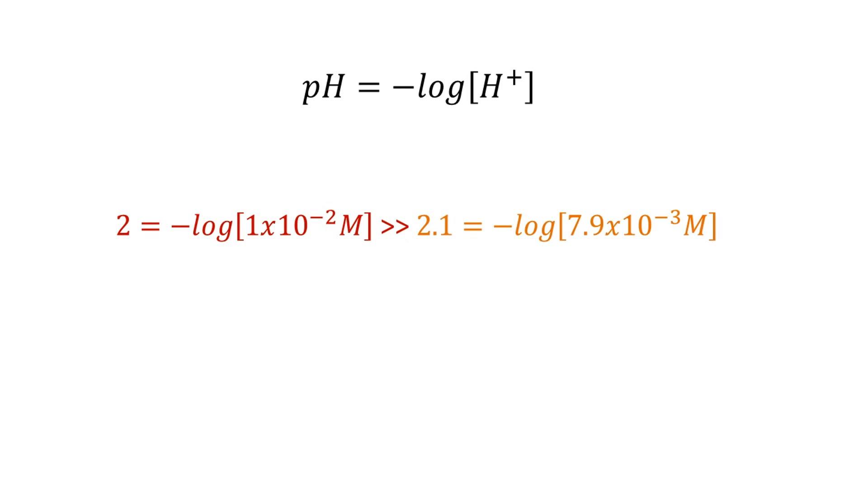For instance, if we have a solution pH 2, H plus concentration is equal to 1 times 10 to the minus 2 molar. On the other hand, if a solution has a pH of 2.1, concentration is equal to 7.9 times 10 to the minus 3 molar, which is a huge difference.